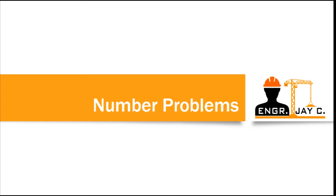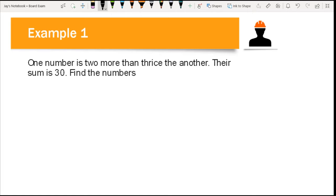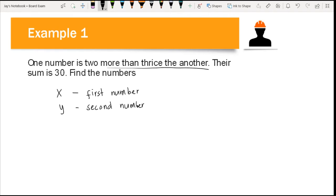Let's try to solve our first example. In this problem, we are asked to find two numbers in which one number is two more than thrice the other, and the sum of these two numbers is 30. The first thing we do is represent the numbers as variables. We let x be our first number and y be our second number. From the problem, the second number is two more than three times the first.